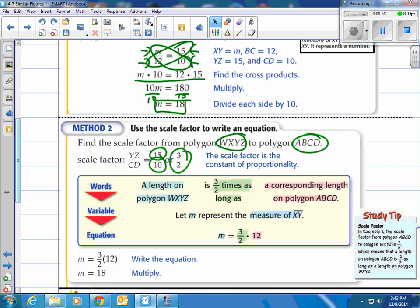It's also called the constant of proportionality, which we talked about in previous lessons. It says, a length on polygon WXYZ is three halves times as long as a corresponding length on polygon ABCD. So what do we do? Well, let M represent the measure of XY, which we're looking for. And we take M and we say that's equal to 3 over 2 times the 12, which we do have. So 12 times 3/2 is 18. That's using scale factor.